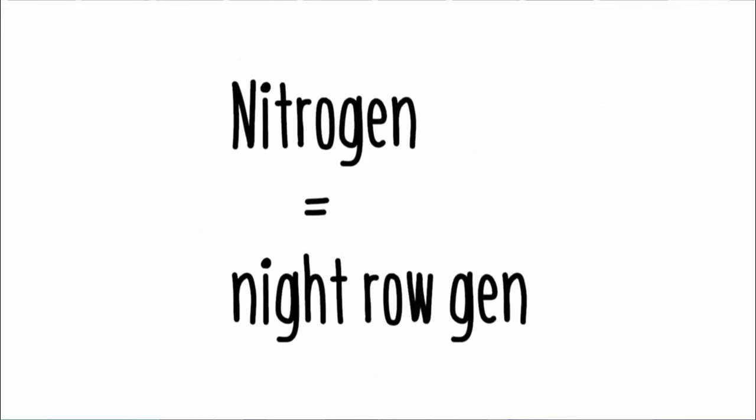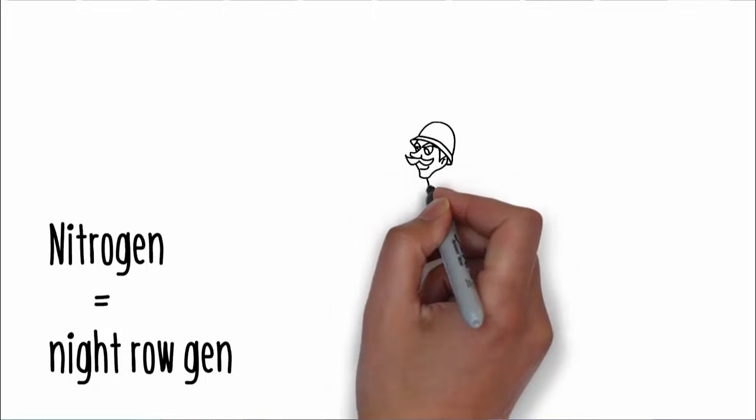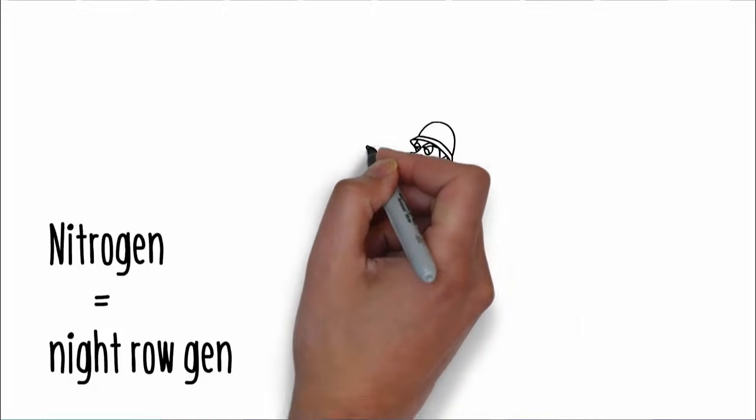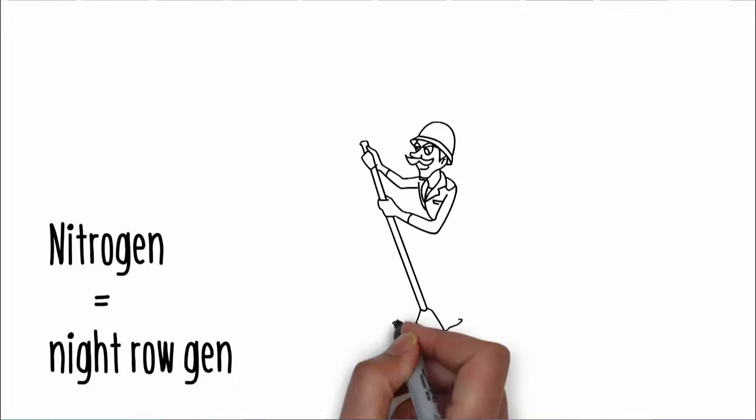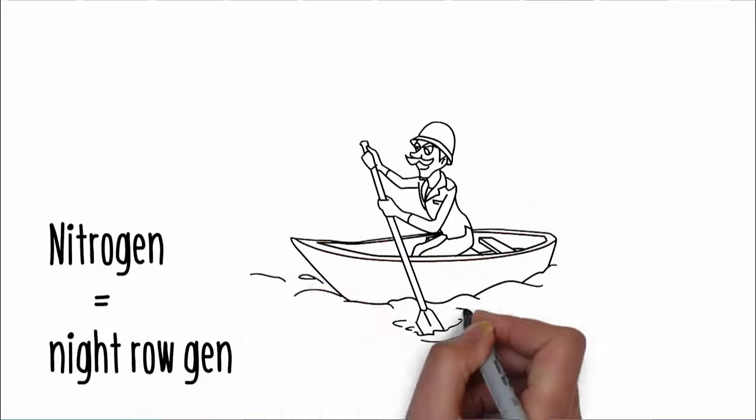The seventh element on the periodic table is nitrogen. If we say nitrogen slowly and break it up, we get night, row, gen. In this instance, we'll say gen is short for general, like an army general.